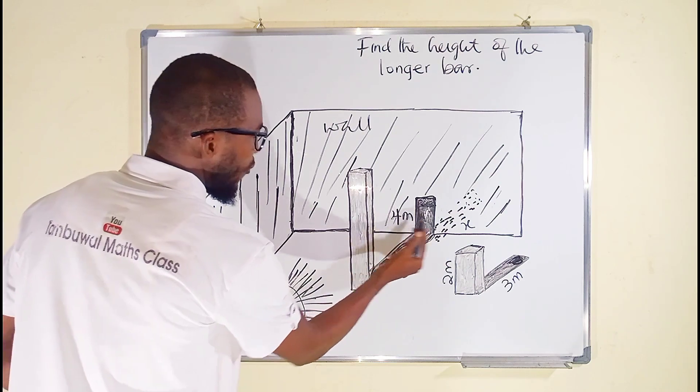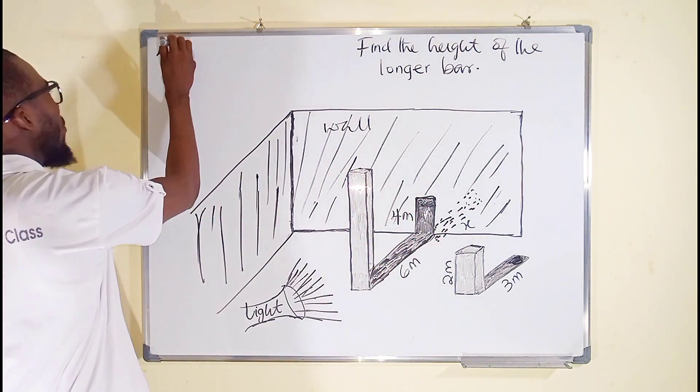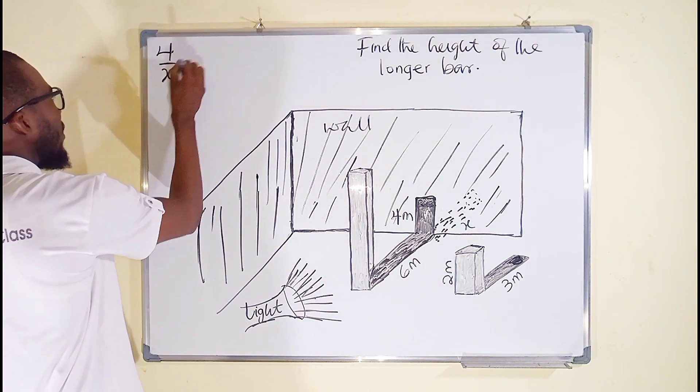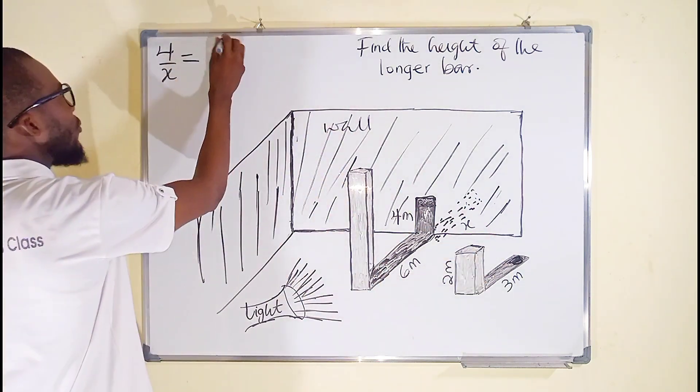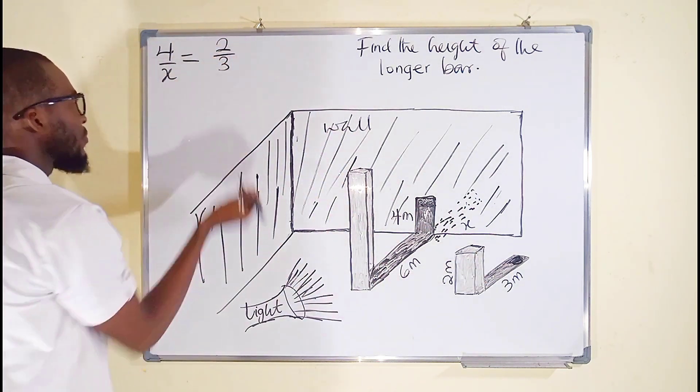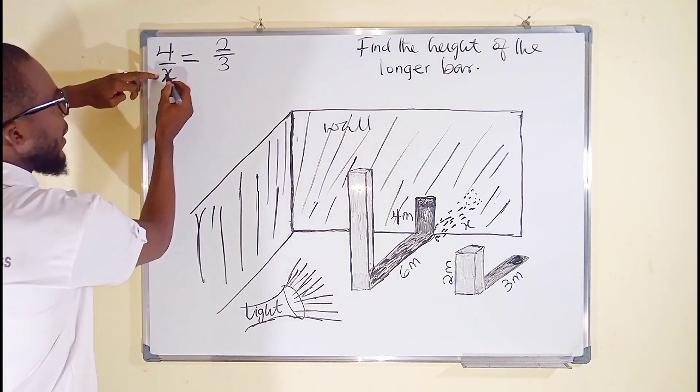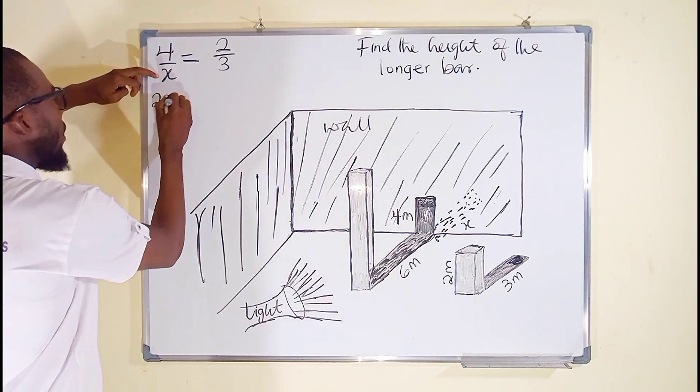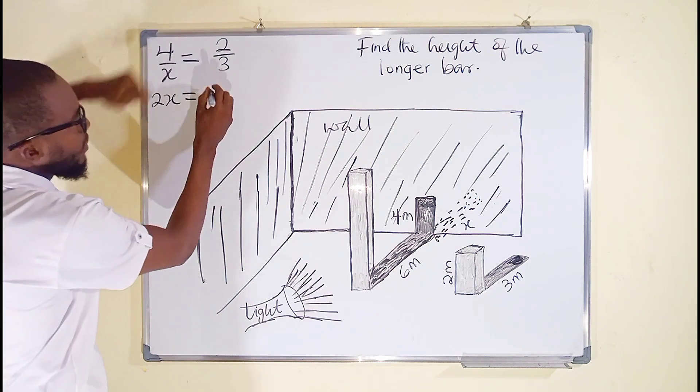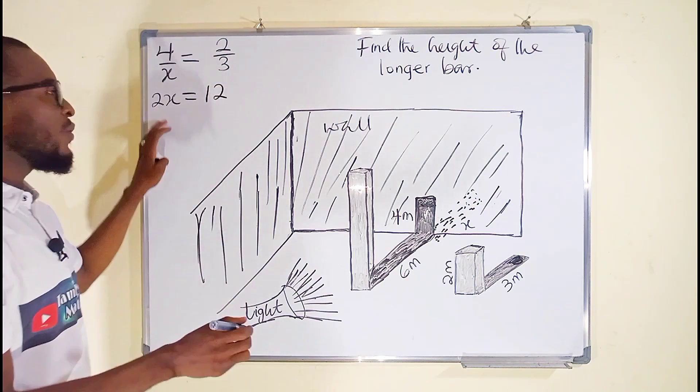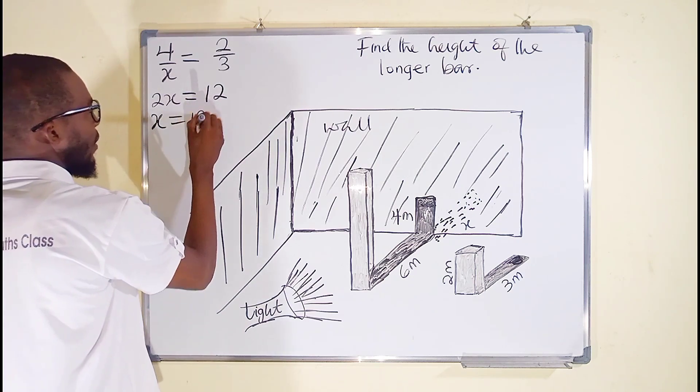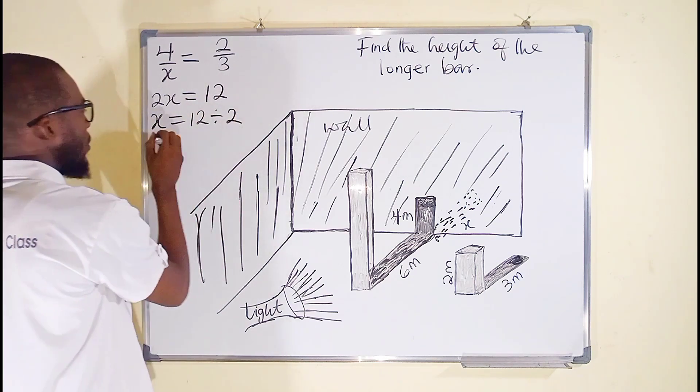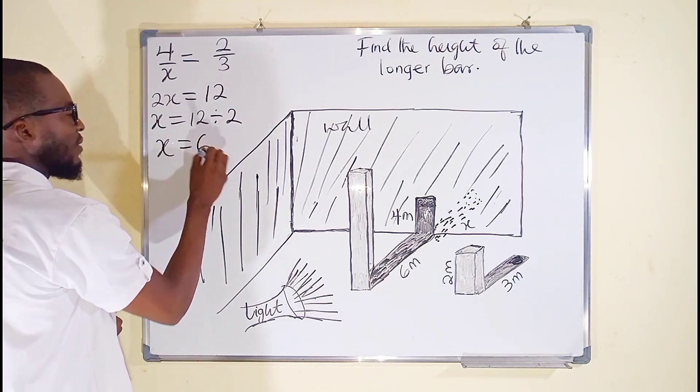The ratio here is going to be 4 over x. So we have 4 over x. This must be equal to 2 over 3. Let us cross multiply. x times 2 is 2x, and 4 times 3 is equal to 12. If you divide both sides by 2, you have your value of x.